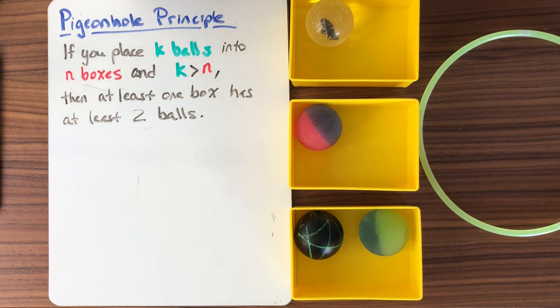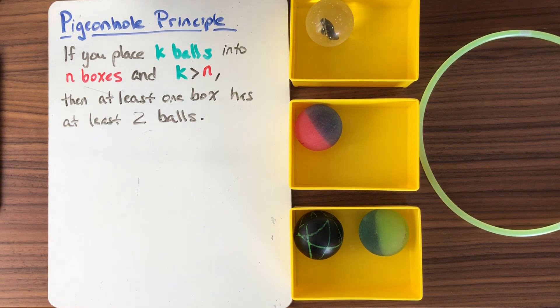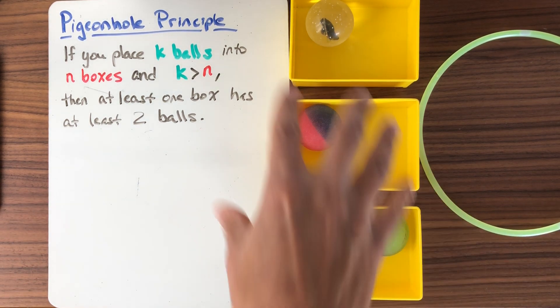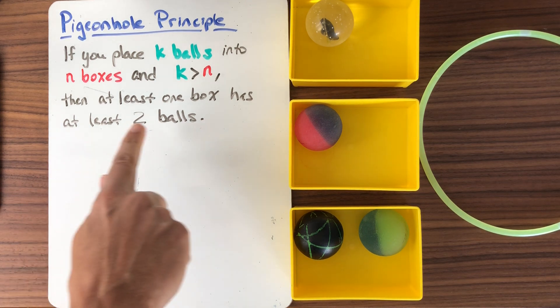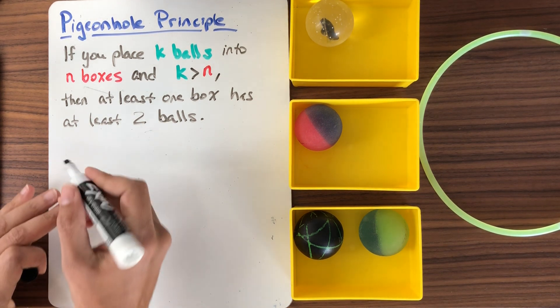So here's the statement written once again. If we place k balls into n boxes and k is bigger than n, we have more balls than we have boxes. Then at least one box has at least two balls. How are we going to prove this?